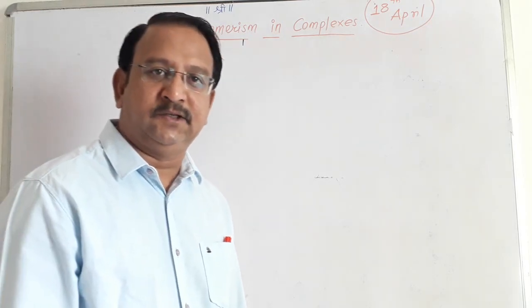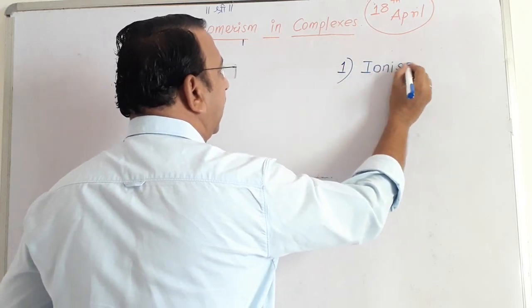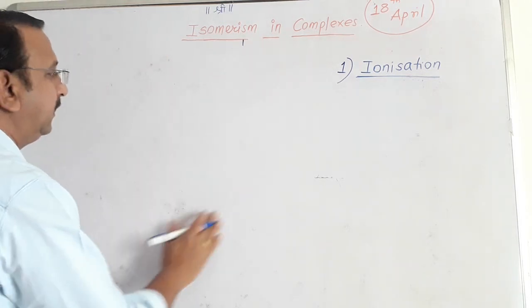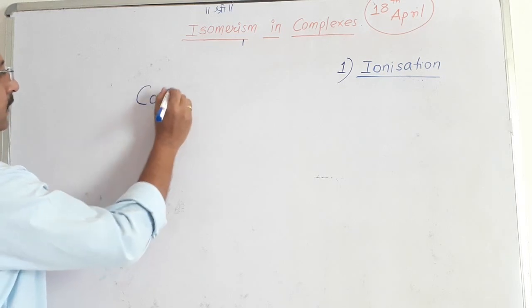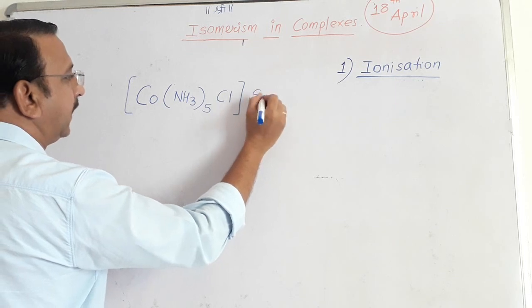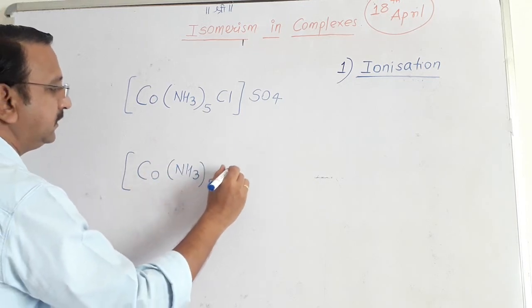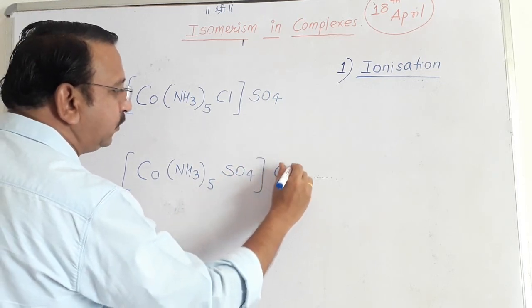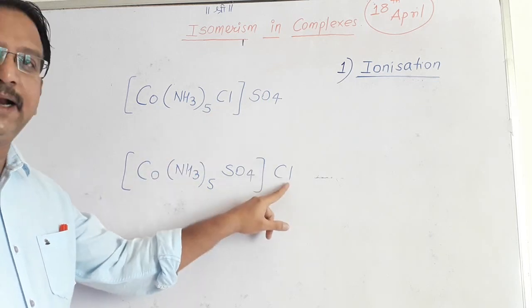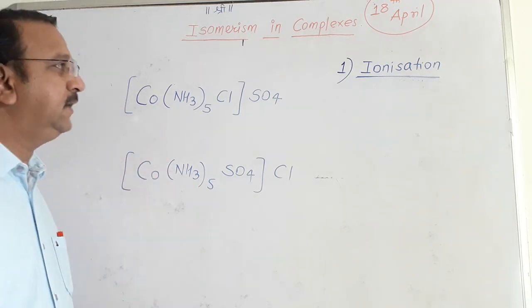Now let's discuss ionization isomerism first. If I take a simple complex, [Co(NH3)5Cl]SO4 and another complex [Co(NH3)5SO4]Cl, here sulfate is acting as ligand whereas chlorine is coming out as counter ion. When an anionic ligand can act as counter ion and counter ion can act as potential ligand, then such type of isomers are called ionization isomers.